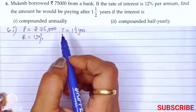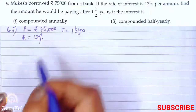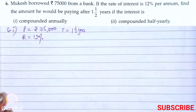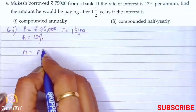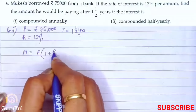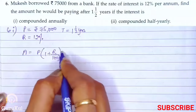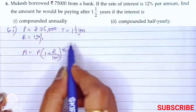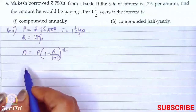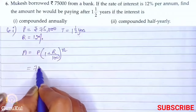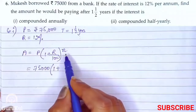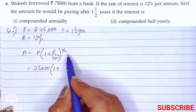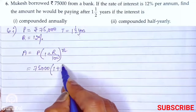For the first part, we need to find the amount if the interest is compounded annually. The formula is: Amount = P × (1 + R/100)^N, where N means time. So we have 75,000 × (1 + 12/100)^N.